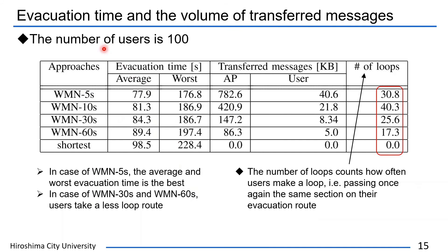This table shows evacuation time and the volume of transferred messages. The number of loops counts how often users make a loop, namely passing through the same section more than once on their evacuation route. In case of WMN-5 seconds, the average evacuation time is the best because users can always obtain up-to-date section information. However, in case of WMN-60 seconds, users are not sensitive to changes in section information so that users take a less looping route.